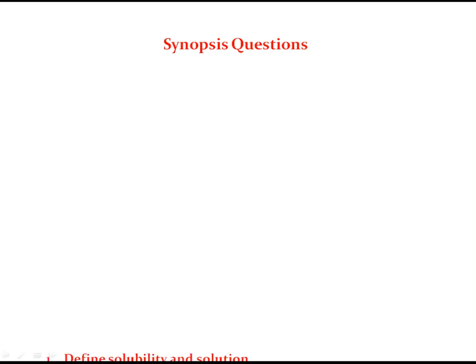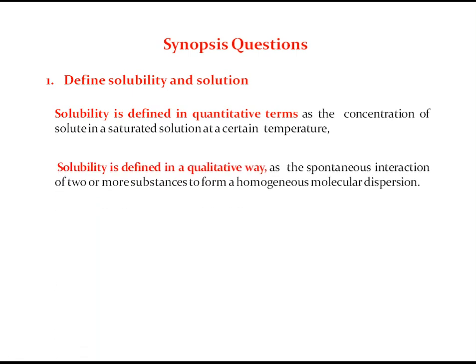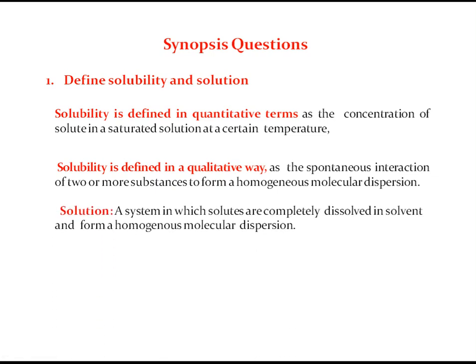Synopsis questions: First question — define solubility and solution. Solubility in quantitative terms: concentration of solute in a saturated solution at a certain temperature. Solubility in qualitative terms: the spontaneous interaction of two or more substances to form a homogeneous molecular dispersion. Solution: a system in which solutes are completely dissolved in a solvent, forming a homogeneous molecular dispersion.